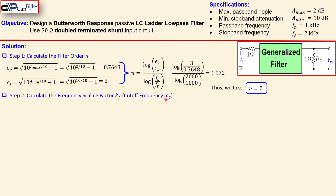Step two is to calculate the frequency scaling factor, also called the cutoff frequency omega_c, denoted kf. For the Butterworth low pass filter, kf = omega_p × epsilon_p^(−1/n). Omega_p = 2π × 1000 Hz, epsilon_p = 0.7648, and n = 2. Working this out gives kf = 7185 radians per second, which corresponds to 1143 Hz. This is the cutoff frequency we will verify in simulation.